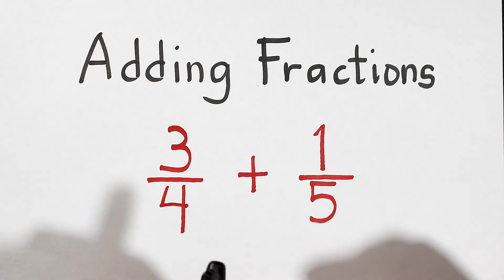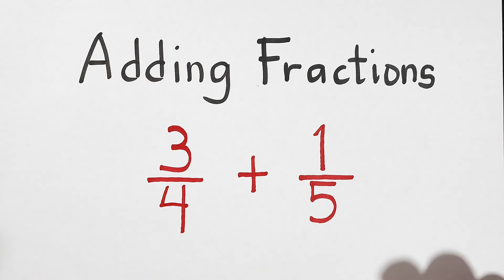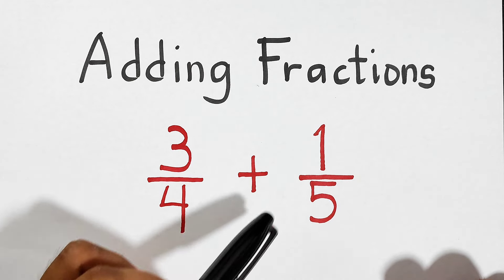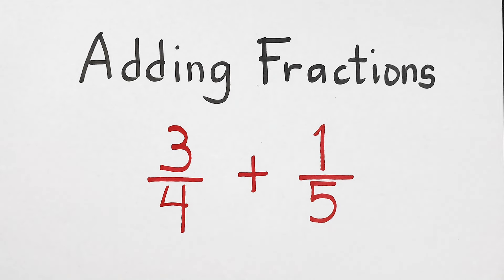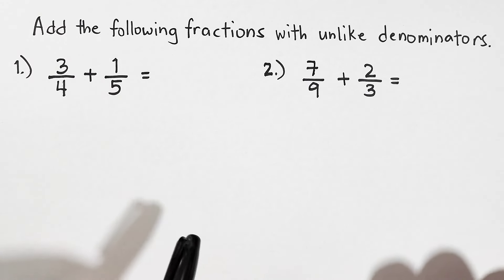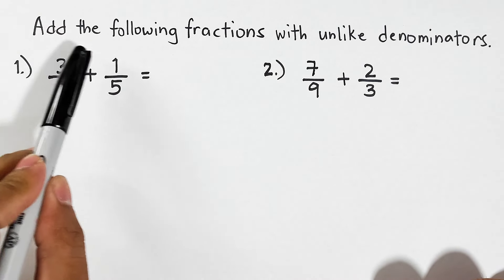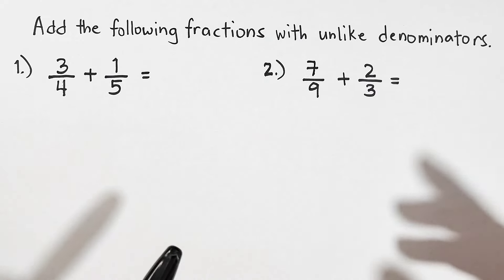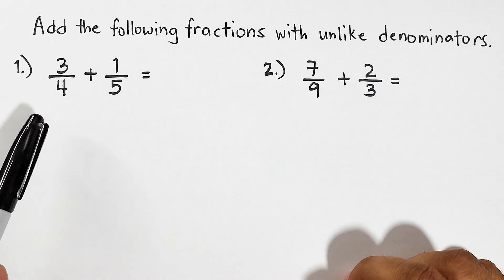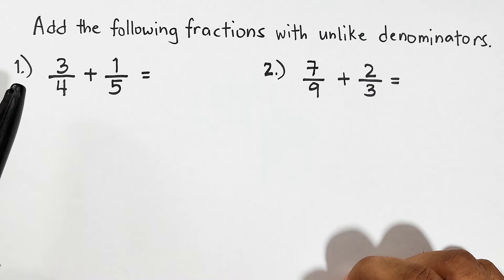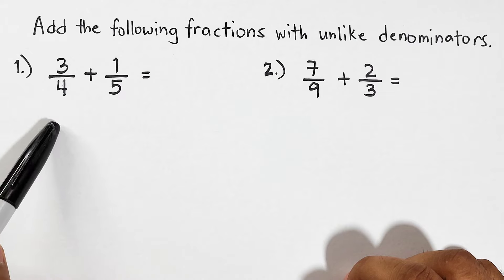Hello everyone, this is Teacher Gon. In today's video we will talk about adding fractions. So what we have here is that we need to add the following fractions with unlike denominators. As you can see from example number one and number two, we have the denominators four and five.